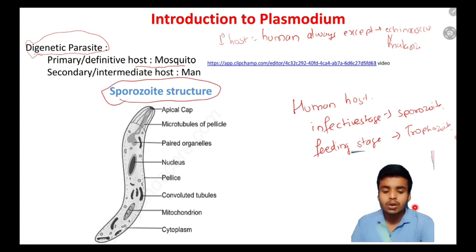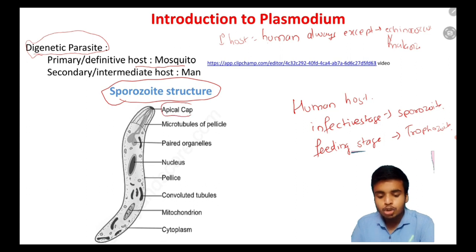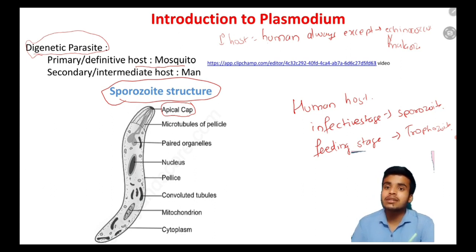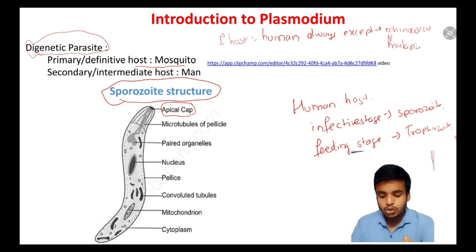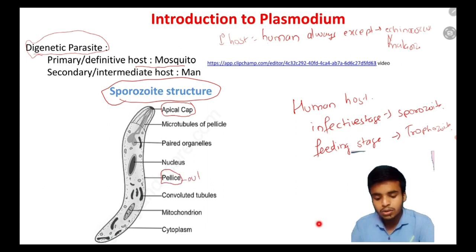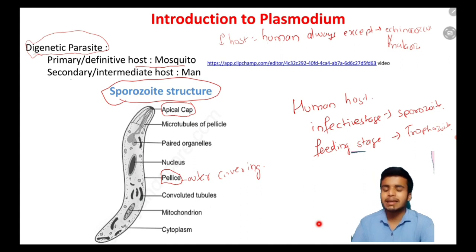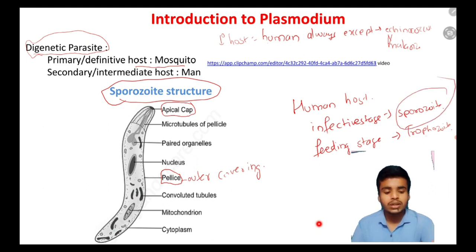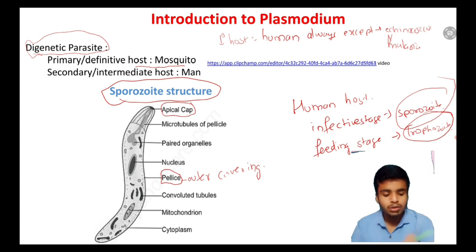Regarding the structure of sporozoite, you will see the apical cap at its apex. The outermost covering of Plasmodium is the pellicle. So the human infective form is sporozoite and the feeding form is trophozoite.